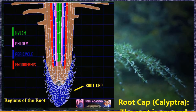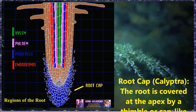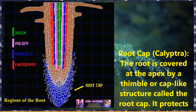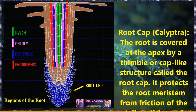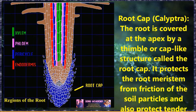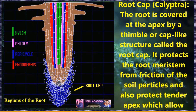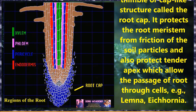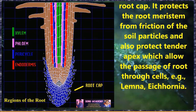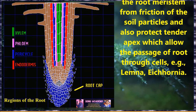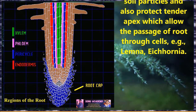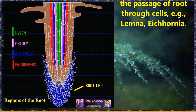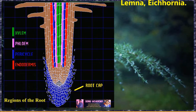Let us discuss the regions of the root. A typical root contains the following five regions; however, there is no clear line of distinction between these regions. First, let us discuss about the root cap. The root is covered at the apex by a thimble or cap-like structure called the root cap. It protects the root meristem from friction of the soil particles and also protects the tender apex, which allows the passage of root through the soil. Examples are Lemna and Eichhornia.